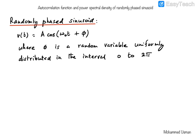The received carrier signal therefore has a random amount of phase shift. The phase phi is a random variable uniformly distributed in the interval 0 to 2π. Without any derivation or proof, I will just give the autocorrelation function for the randomly phased sinusoid. The proof itself will be given in a different video.